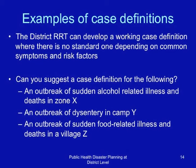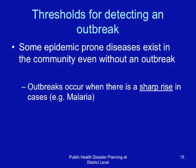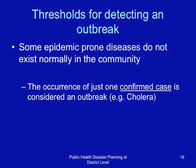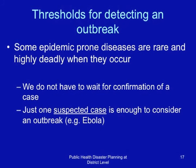Some epidemic-prone diseases exist in the community even without an outbreak — an example is malaria, which is prevalent in many parts of Eastern Africa. For an outbreak to be declared, there must be a sharp rise in cases beyond the expected threshold for a particular season. Some epidemic-prone diseases do not exist normally in the community; the occurrence of just one confirmed case is considered an outbreak — an example is cholera. Some diseases are rare and highly deadly; just one suspected case is enough to consider an outbreak — an example is Ebola.